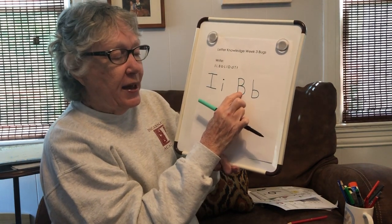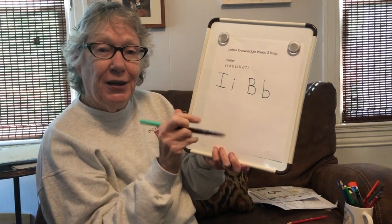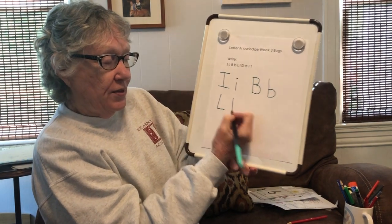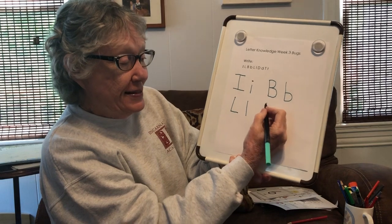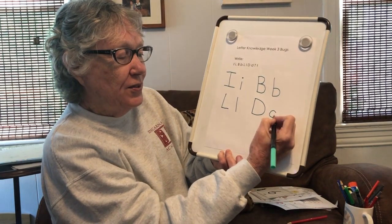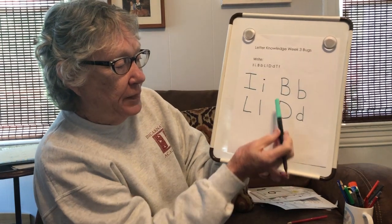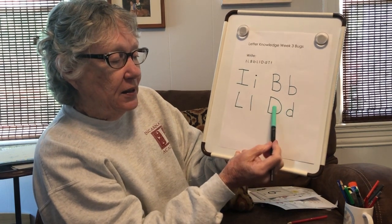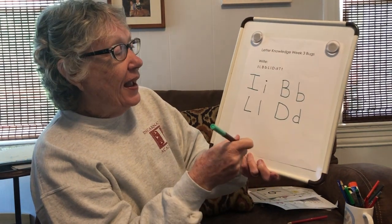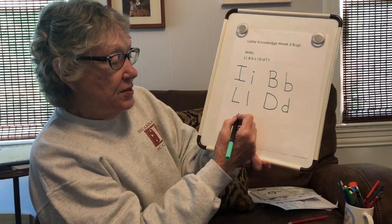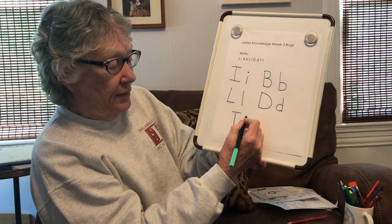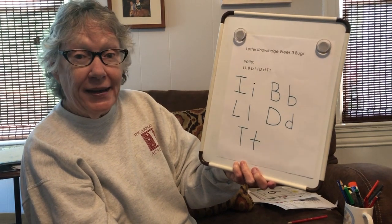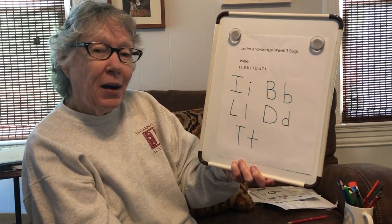The curve is on the same side with the capital and the lowercase. Capital L, lowercase L, capital D, lowercase D. You can see it right there — that curve goes on the same side of the line with the B, but it's opposite with the D. And our last one is capital T and lowercase T.